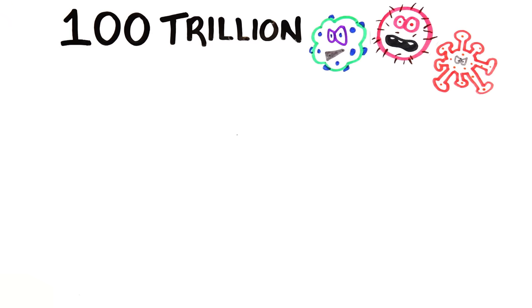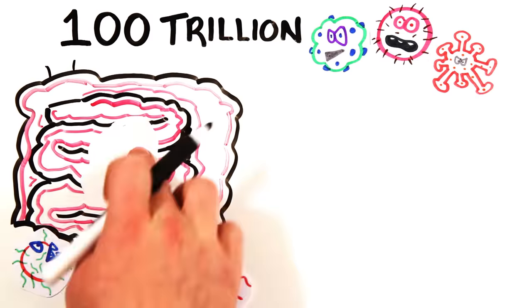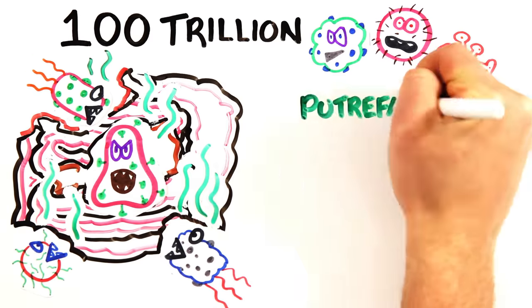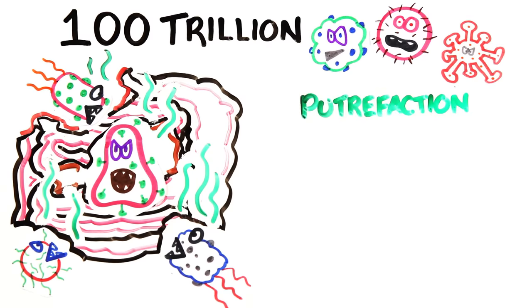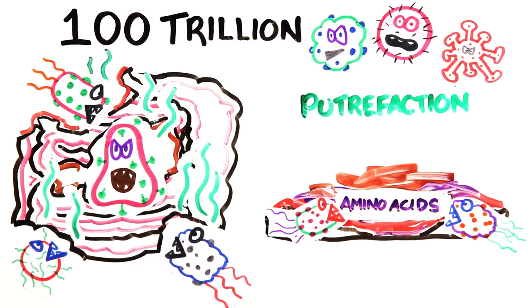There are also around 100 trillion microorganisms that help to break down your body. The anaerobic bacteria in the gastrointestinal tract begin to eat through abdominal organs. This process is known as putrefaction, and it's where things can get stinky. The breakdown of amino acids by the bacteria produces extremely foul gases.